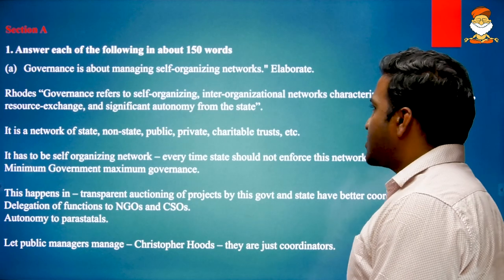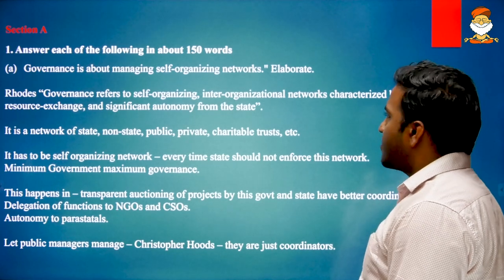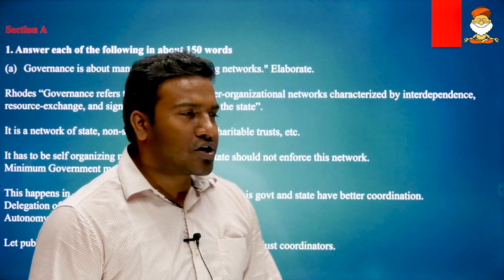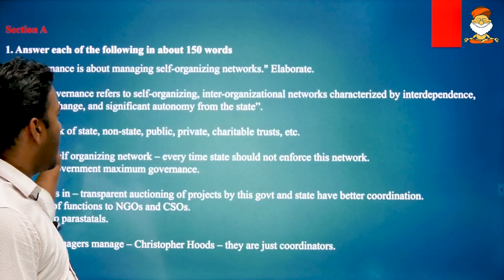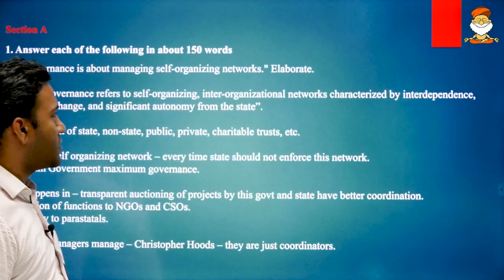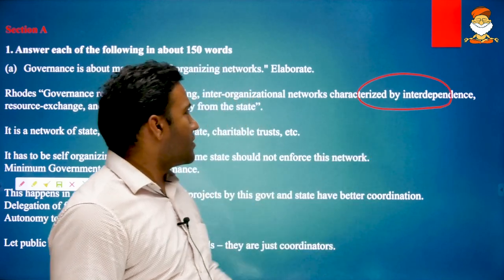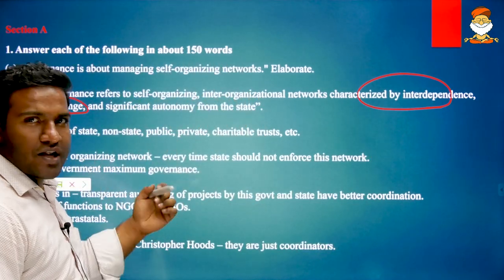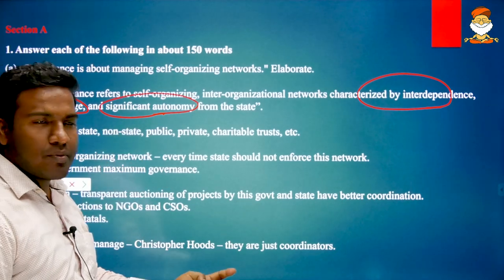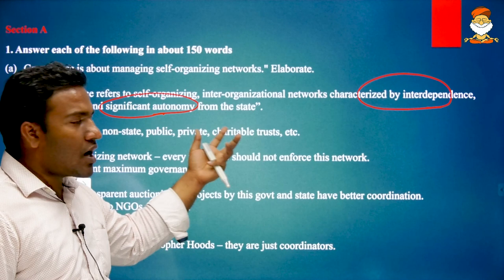We begin with Roth's quote: 'Governance refers to self-organizing inter-organizational networks characterized by interdependence, resource exchange and significant autonomy from the state.' The quote itself provides a brief answer — how self-organizing happens through inter-governmental networks involves interdependence, resource exchange, and significant autonomy.